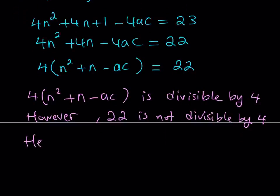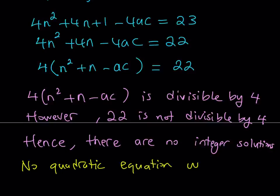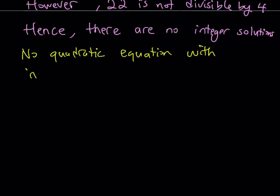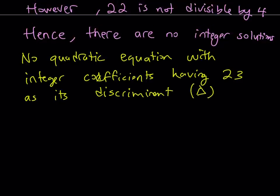What is that supposed to mean? Hence, there are no integer solutions. Why? Because you have an equation where the left-hand side is divisible by 4, but the right-hand side is not divisible by 4, and this is impossible. Therefore, we have no quadratic equation with integer coefficients having 23 as its discriminant — which is delta. And that is going to be our conclusion.